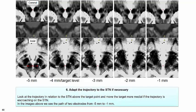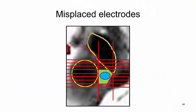In the final step, adapt the trajectory relative to the STN if necessary: look at the trajectory in relation to the STN above the target point and move the target more medially if the trajectory is encroaching on the STN. The images above show the path of two electrodes in the zona inserta from 5 to 1 mm below the ACPC plane.